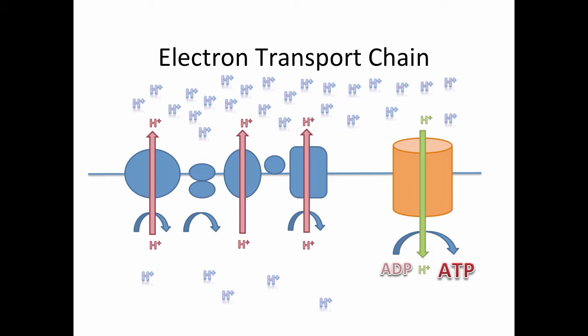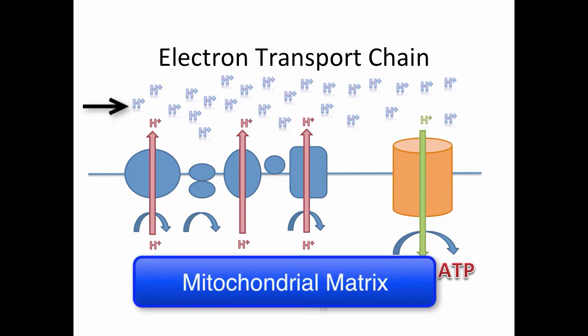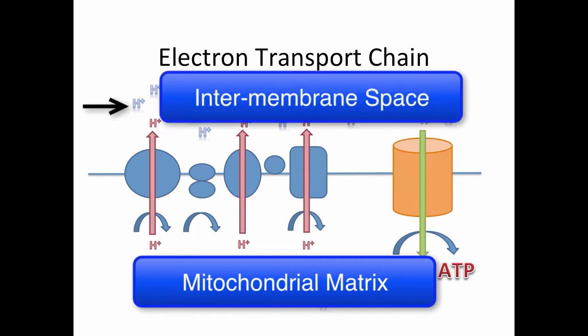Within this model, the solid blue line represents the inner membrane within a mitochondrion. The space below the line represents the mitochondrial matrix. The space above it represents the intermembrane space of the mitochondrion.